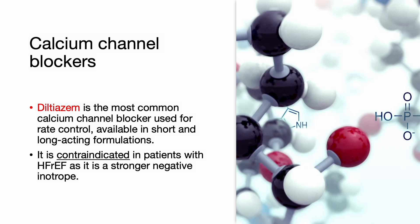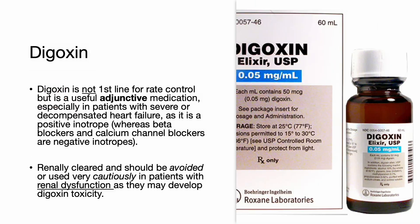Diltiazem is the most common calcium channel blocker used for rate control, available in short and long-acting formulations. It is contraindicated in patients with heart failure with reduced ejection fraction as it is a stronger negative inotrope. Digoxin is not first line for rate control, but is useful as adjunctive medication, especially in patients with severe or decompensated heart failure as it is a positive inotrope, whereas beta blockers and CCBs are negative inotropes. Digoxin is renally cleared and should be avoided or used very cautiously in patients with renal dysfunction as they may develop digoxin toxicity.